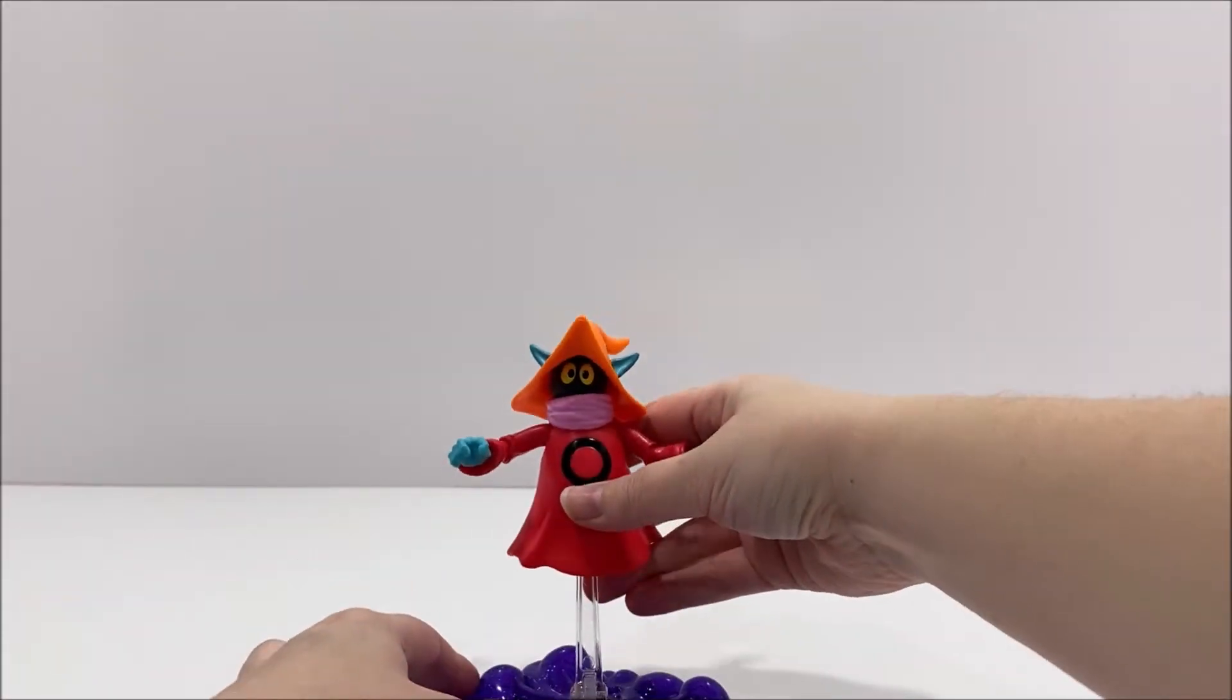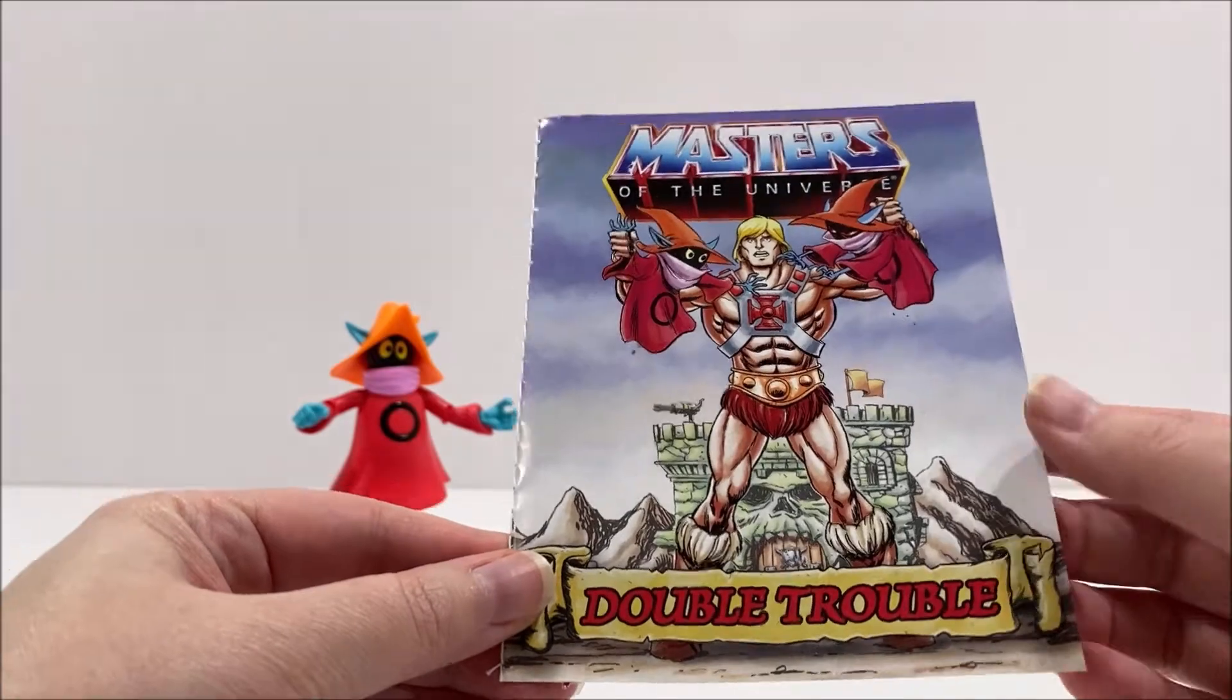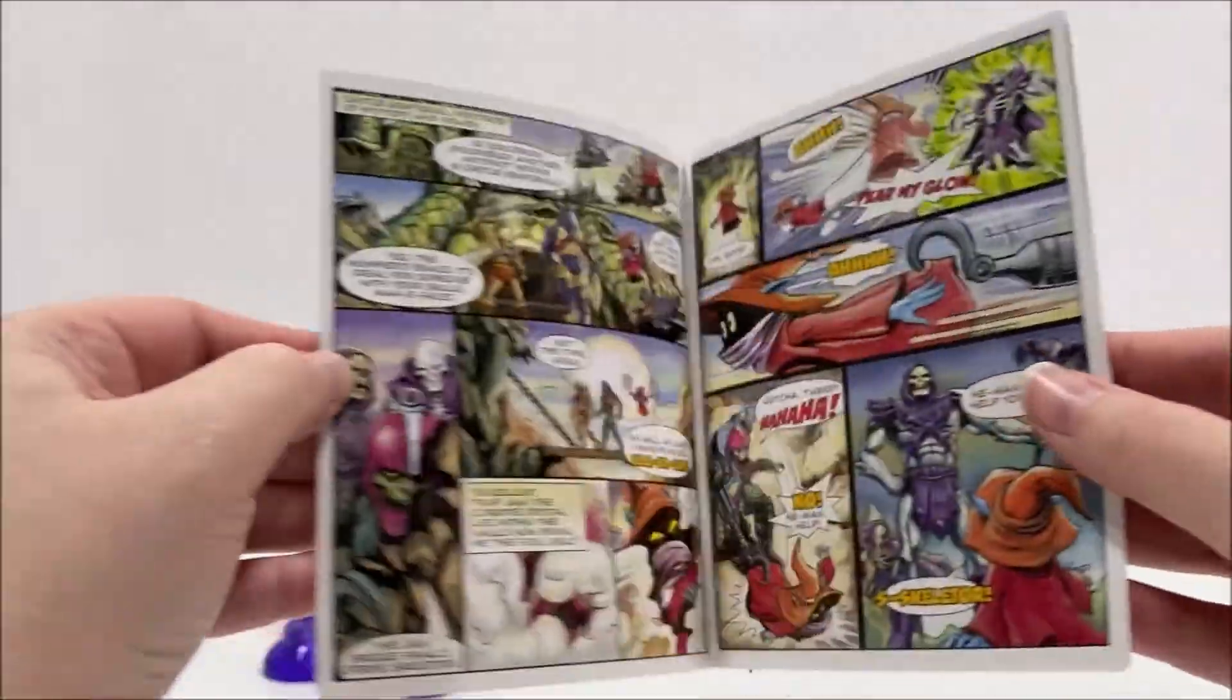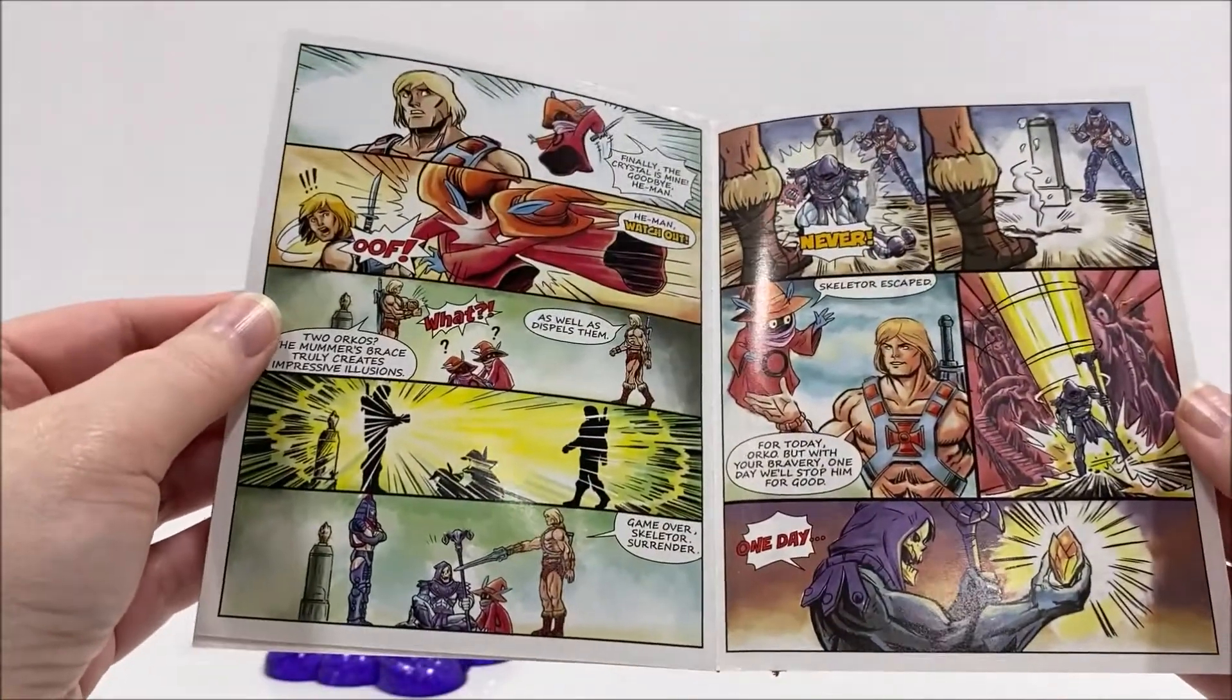Orko only comes with a stand and the same mini-comic that all of Wave 2 figures come with. I am very happy that Mattel decided to include a float stand with Orko in this toy line, as it does allow for a much better display in your MOTU collection.